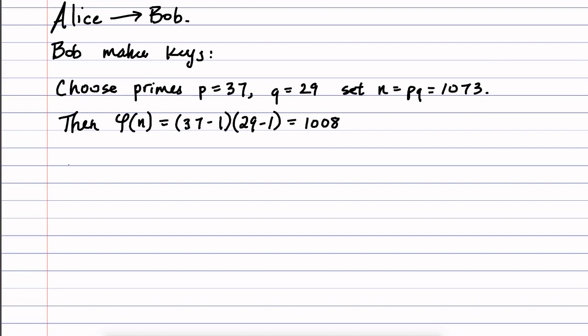Next step is start choosing your keys. So you're going to choose a number E, and in this case let's say we choose 571.